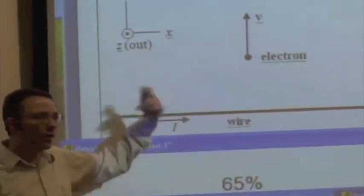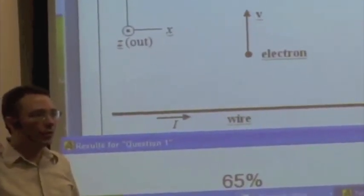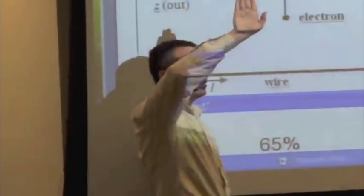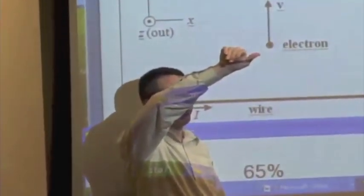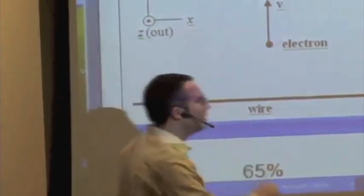And then the force, once you know the direction of B, the force is what? QV cross B, right? So V cross B is that way. But you have to multiply it by the charge of the electron, flip it. It's going to be in the negative x direction.